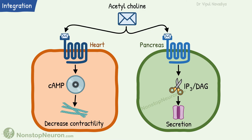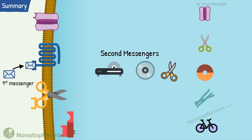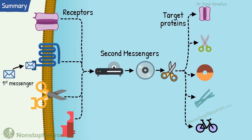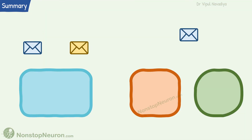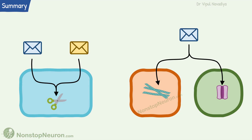So that was all about intracellular signaling or the second messenger system. Let's have a quick summary. The second messenger system conveys signals from receptors to the target proteins. It occurs by a series of activation or inactivation of different second messenger molecules. Some examples of second messenger molecules are cAMP, IP3, DAG, cGMP, etc. Target proteins can be transport proteins, metabolic enzymes, gene regulatory proteins, cytoskeletal proteins, or cell cycle proteins. These target proteins initiate the ultimate response by the cell. The signals are amplified as they travel deeper. Apart from this, the second messenger system integrates signals — different ligand-receptor combinations may activate the same intracellular signaling pathway and affect the same function, and the same ligand may activate a different intracellular signaling pathway in different cells and produce a different response.